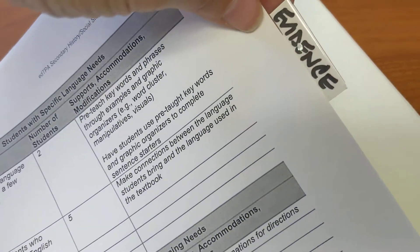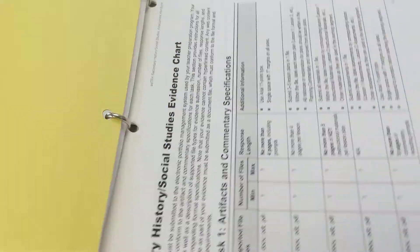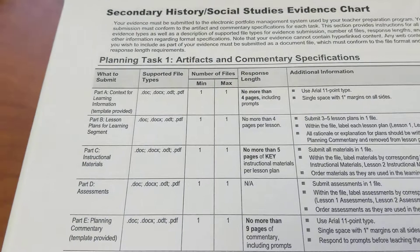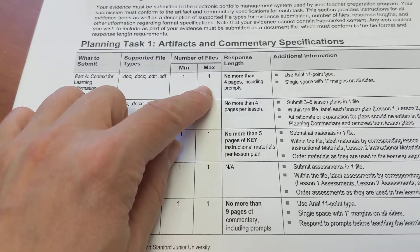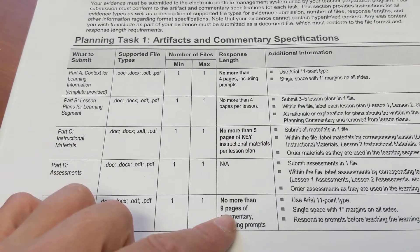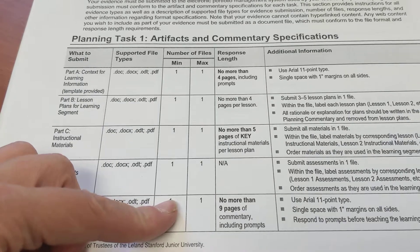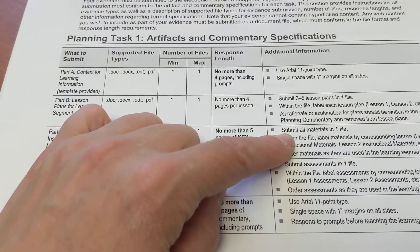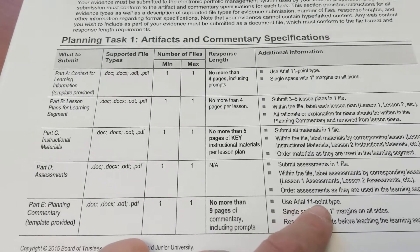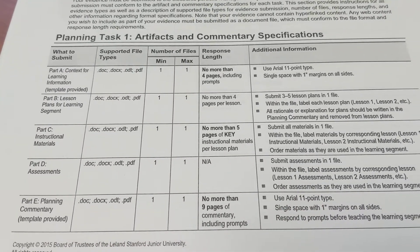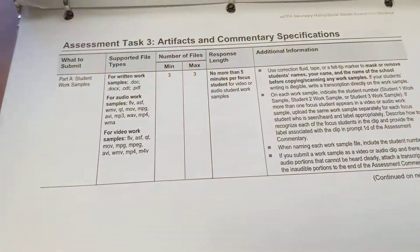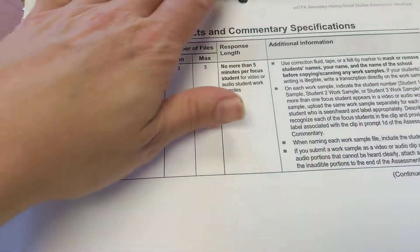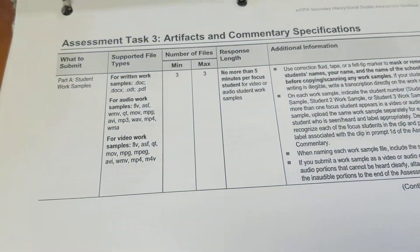Then the last thing I tab is the evidence chart. There are several evidence charts, one per task. These are lifesavers, really, because they point out the minimum and maximum number of files, how many pages per submission I can upload, and whether or not they have to be in one or two files — even the tiny fine print, for example, that my submission needs to be in Arial 11-point type. I end up referring students to this document a lot because if you can't get something to upload, chances are you need to look at the evidence chart.